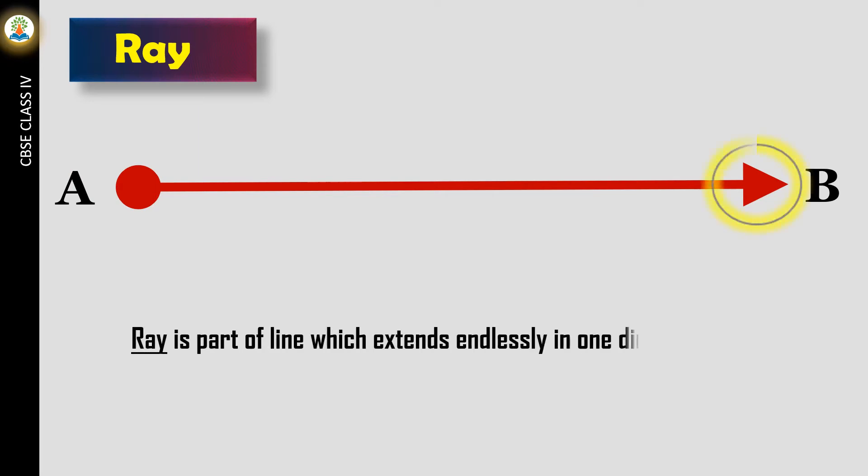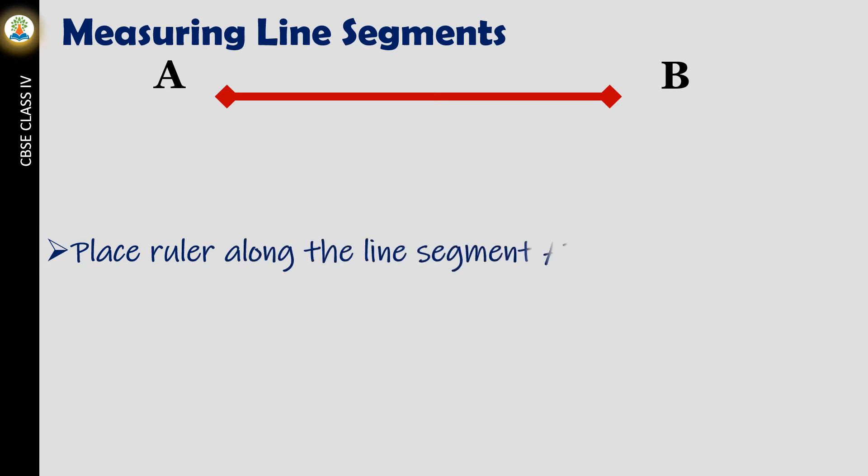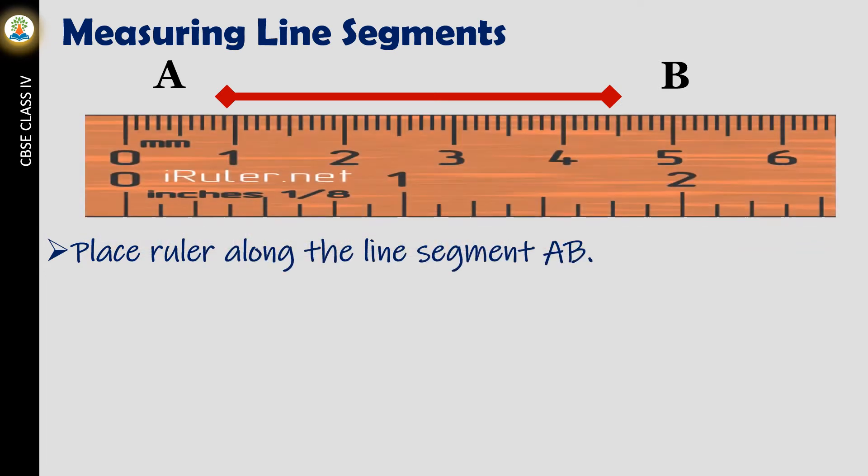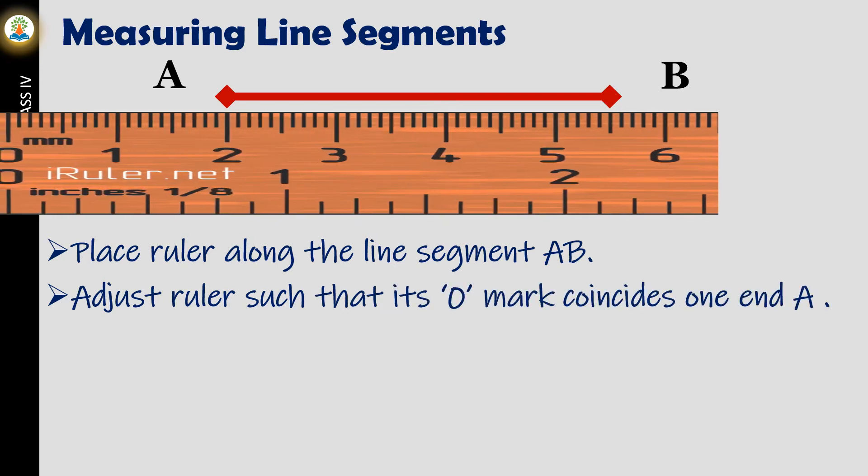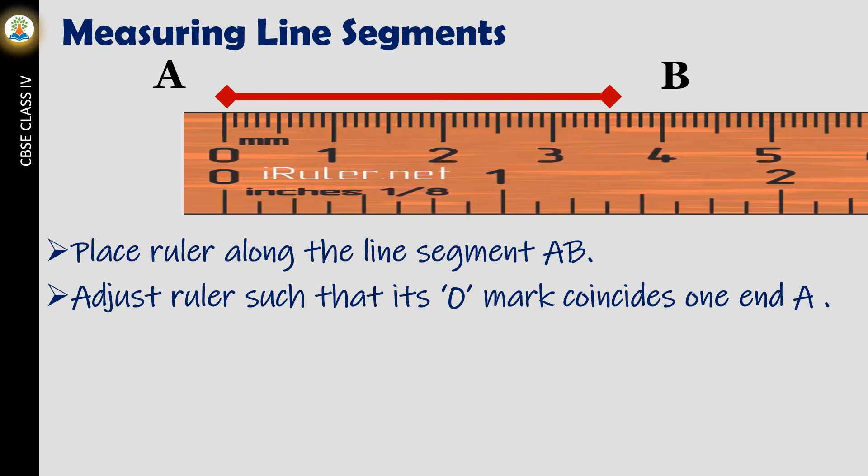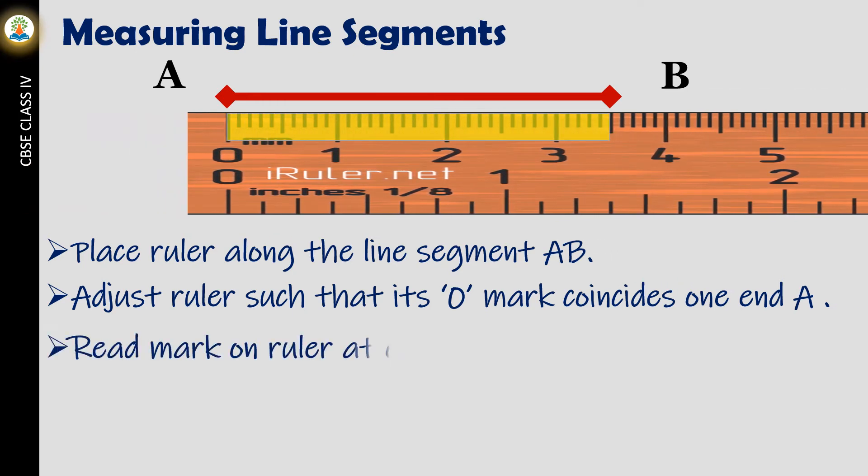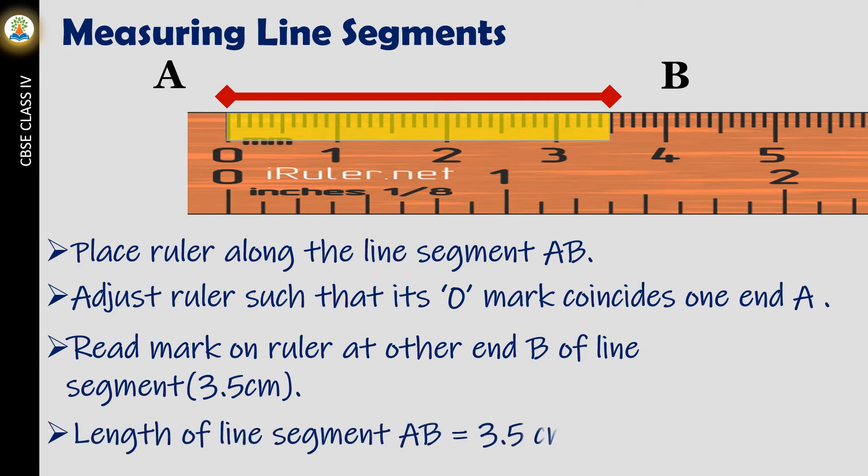Place the ruler along the line segment AB. Adjust the ruler such that its zero mark coincides with one end A. Read the mark on the ruler at the other end B of the line segment. That is 3.5 centimeters. The length of line segment AB is 3.5 centimeters.